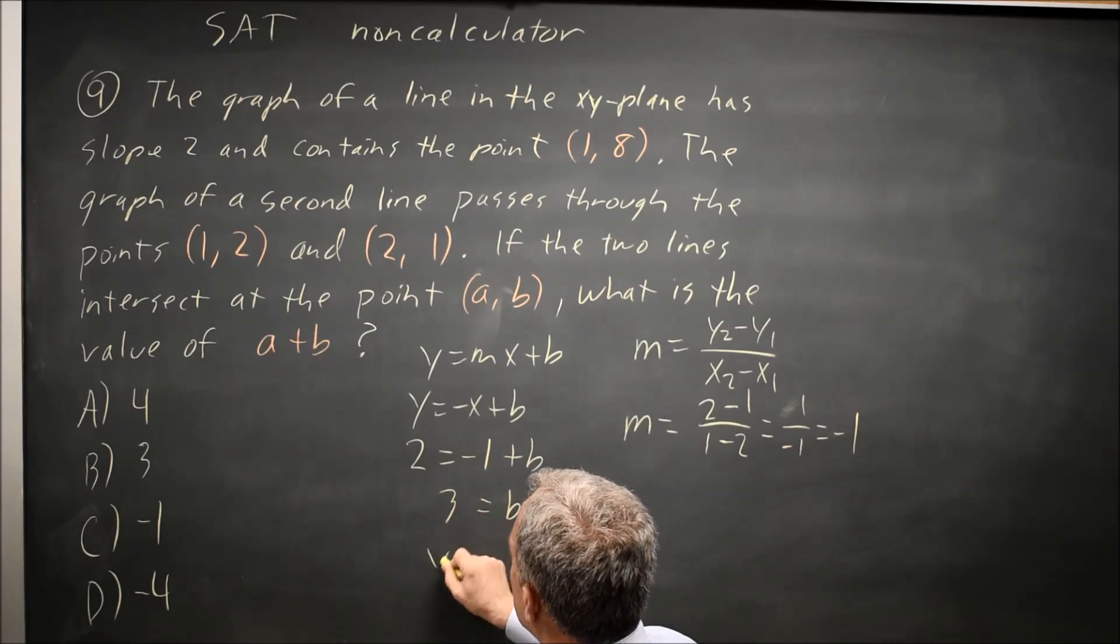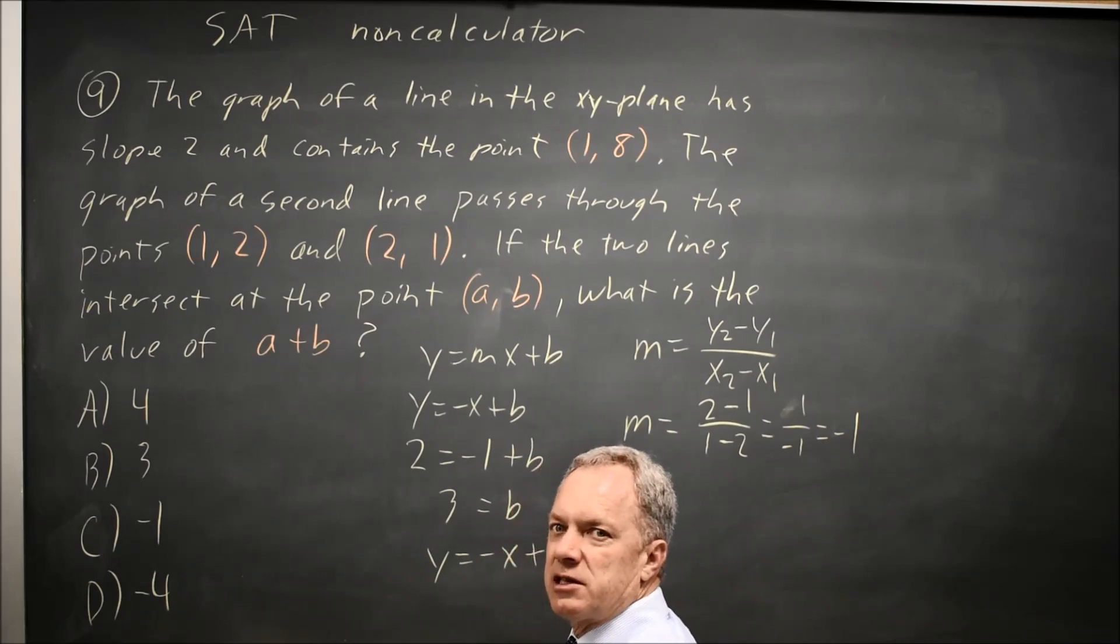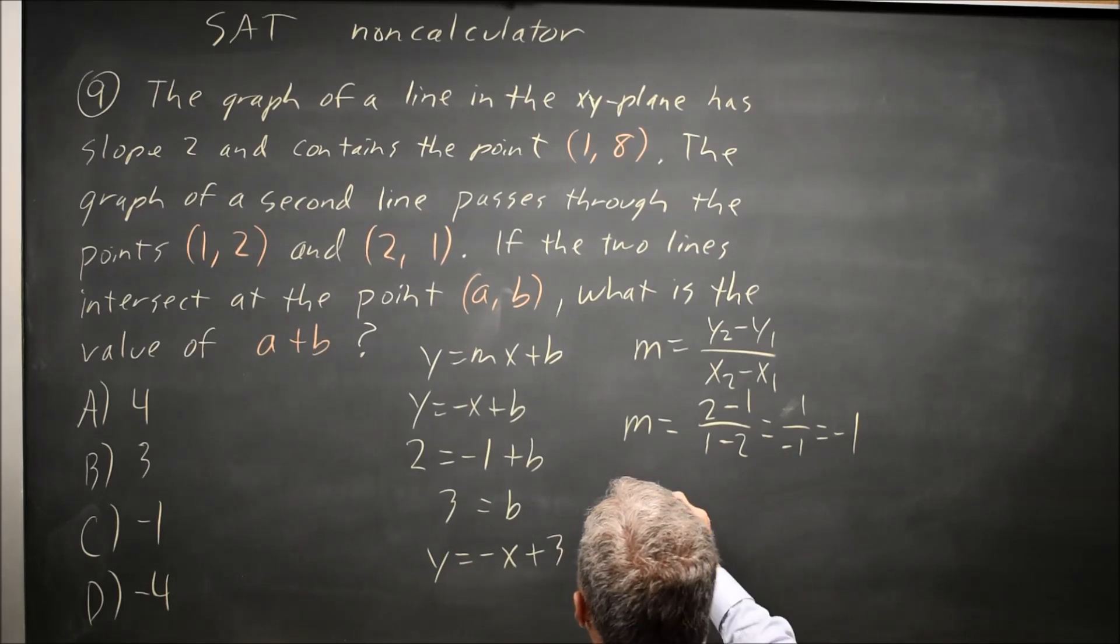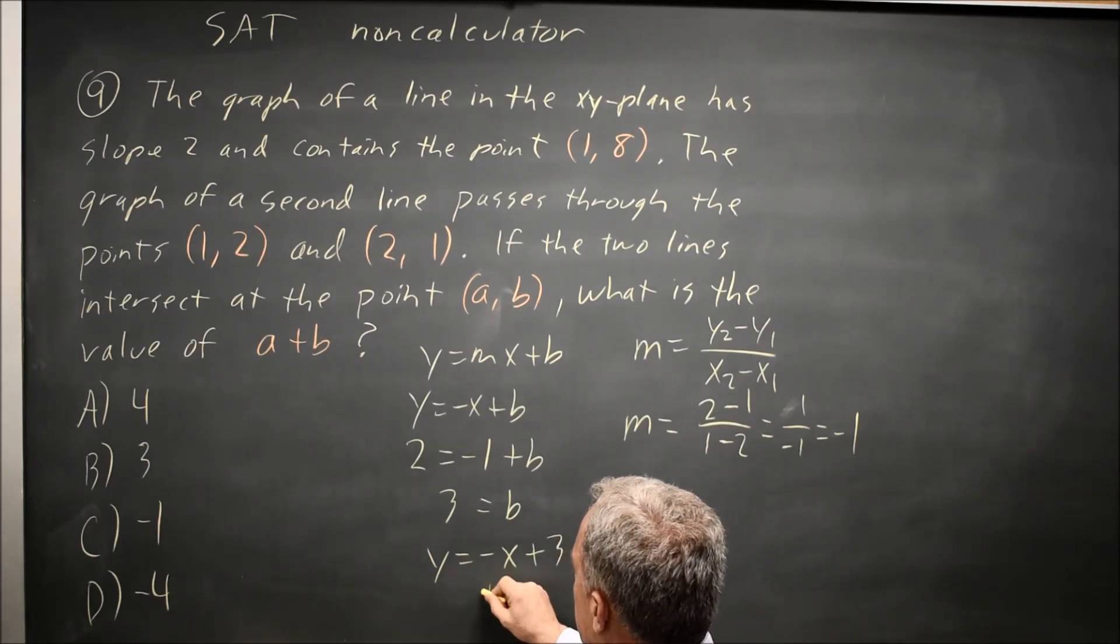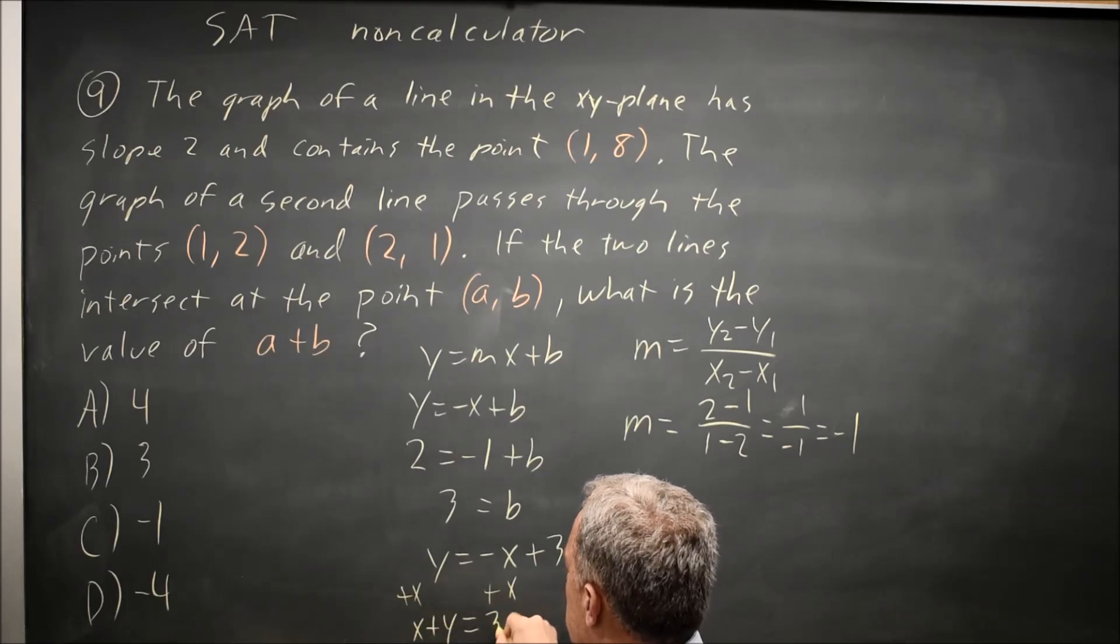So my equation is y equals negative x plus 3. Now I can solve this as a system of equations with the other equation, but there's a shortcut. If I add x to both sides, I get x plus y equals 3.